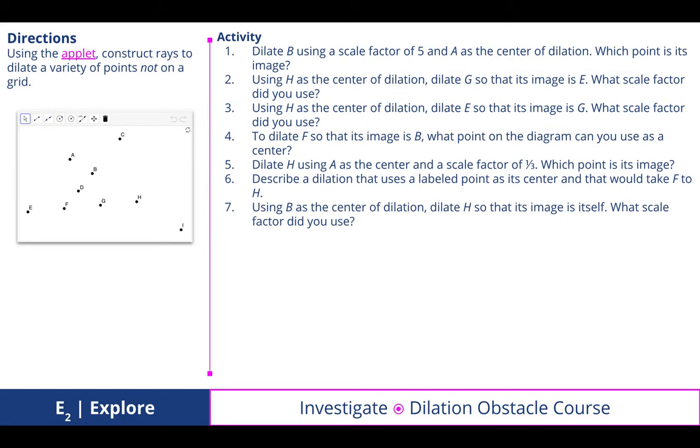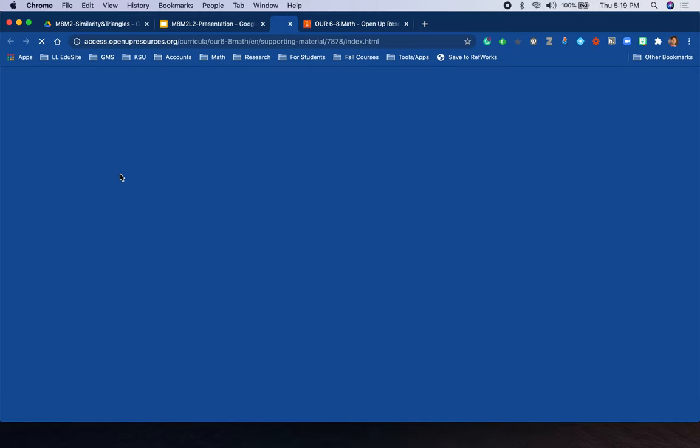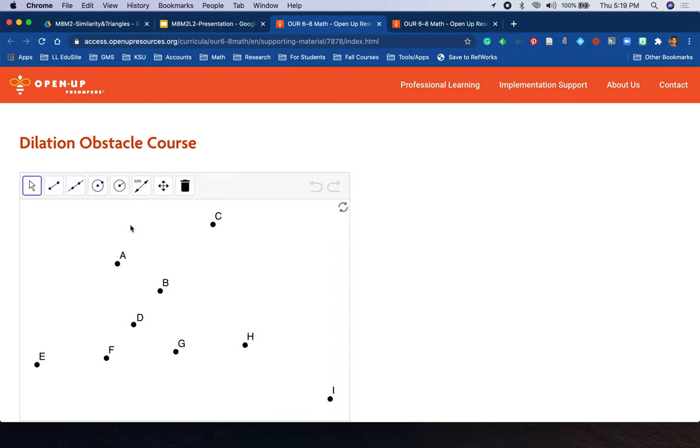Dilation obstacle course. The fun thing about this was investigating dilations by constructing rays on a blank plane with no grids. Looking at the first one which we did together, we noticed that when dilating a point from a center of dilation, it has to stay along that line. We discovered that the answer, which was five times as a scale factor.